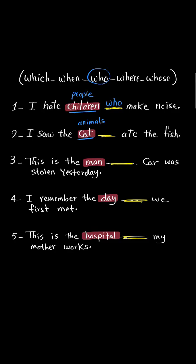If this word refers to animals, like in this sentence 'cat,' or objects or things — I just mean not people — here we use 'which.' So the answer is 'which' and we write it here after 'the cat': I saw the cat which ate the fish.